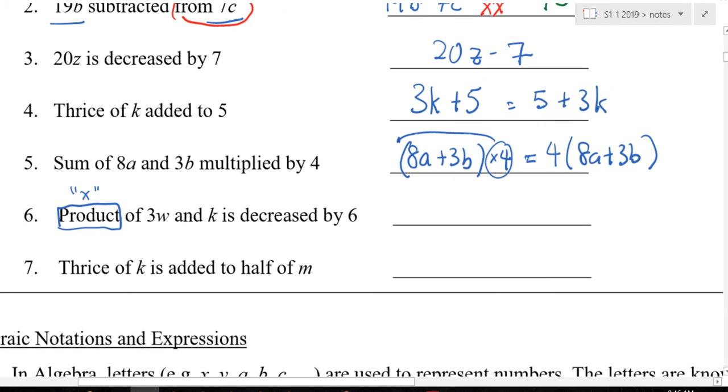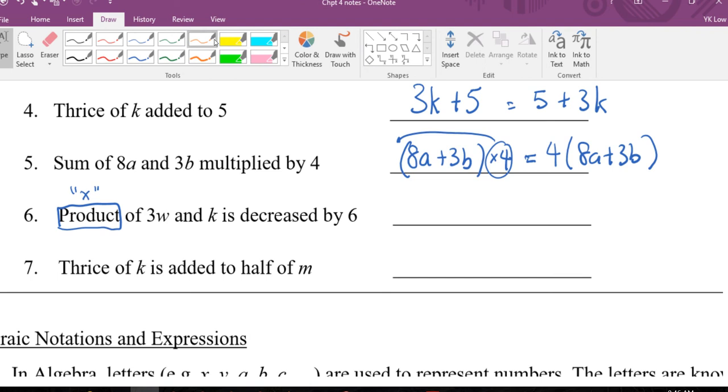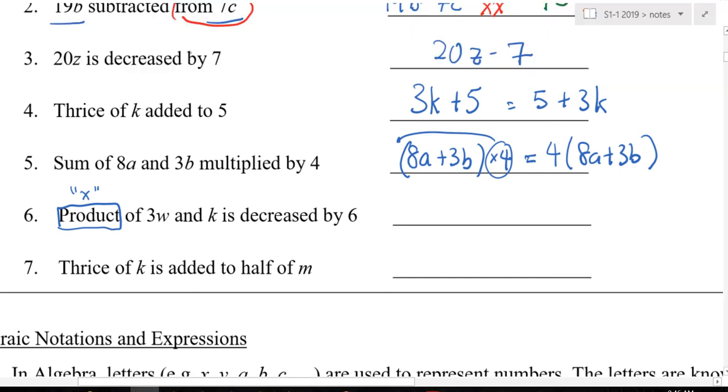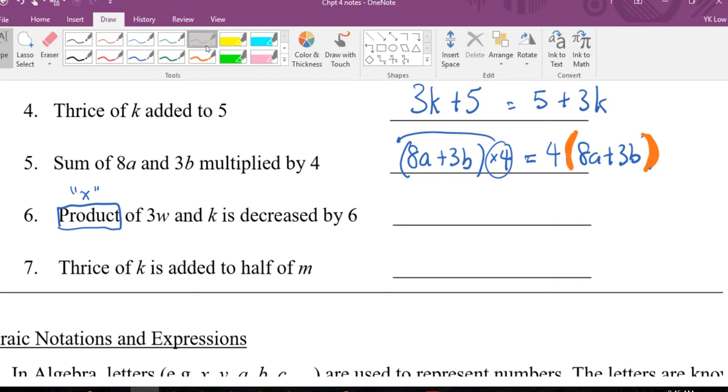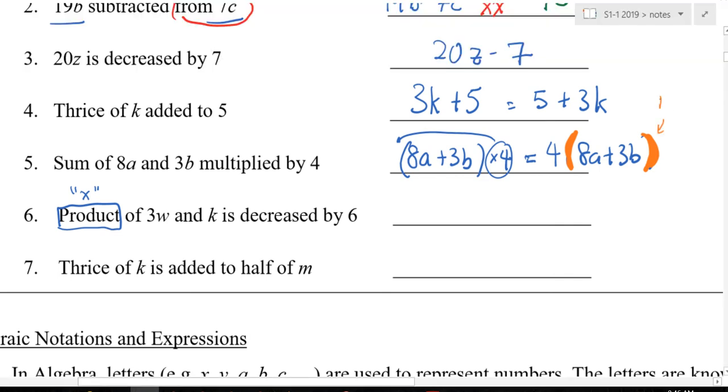Now, can you put down something that is very special? So this bracket here actually means multiplied. So can you write down? Bracket means you want to multiply. Can you see? Multiply. So bracket means multiply. So I say 4 multiplied by the 8a plus 3b.